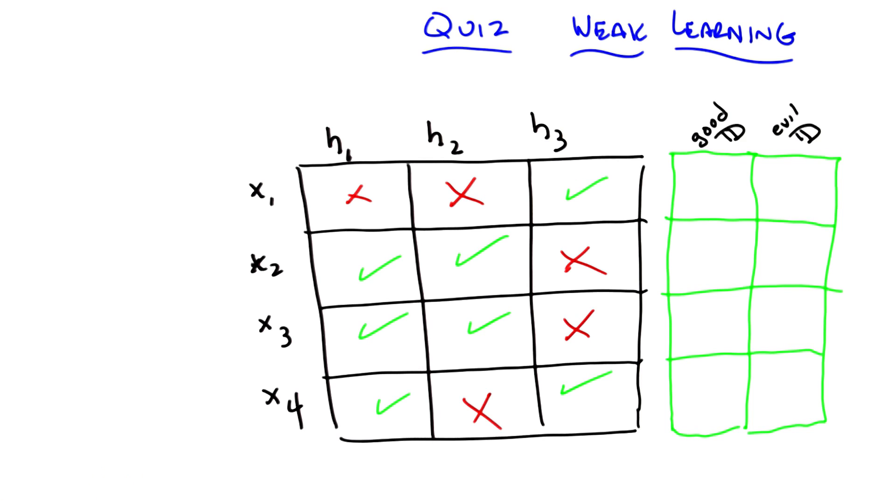And across the top are three different hypotheses. So hypothesis one, hypothesis two, and hypothesis three. So your entire hypothesis space consists only of these three hypotheses. Got it? Got it. Okay.